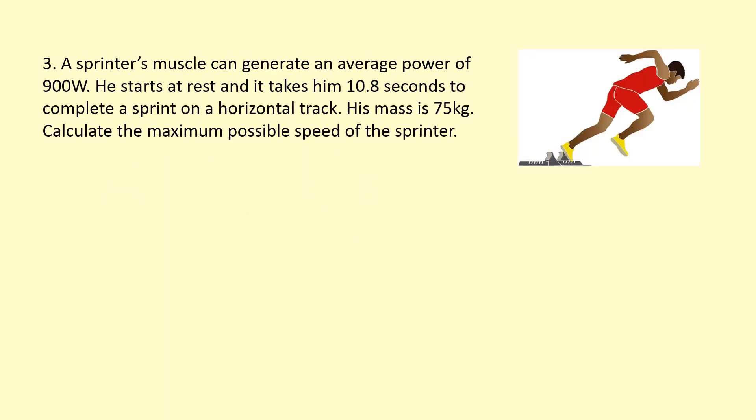A sprinter's muscle can generate an average power of 900 watts. He starts at rest and it takes him 10.8 seconds to complete a sprint on a horizontal track. So I've got power and time, which means power times time will give me the energy. He's transferring 900 joules per second, so if I times that by 10.8 seconds, I get an energy of 9,720 joules that he's going to transfer over this sprint. His mass is 75 kilograms.